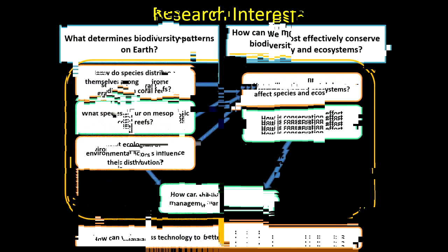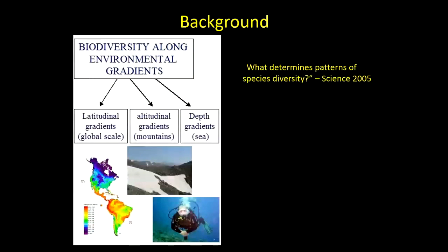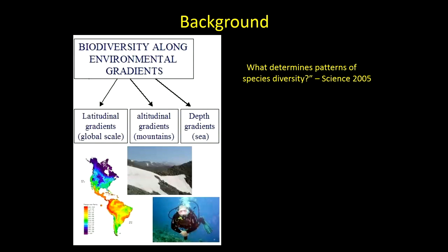So, what determines patterns of species diversity? In 2005, Science, as part of their 125th anniversary, published 125 of the most critical questions in science, and 'what determines patterns of species diversity' was one of them. We know that biodiversity is distributed along various environmental gradients - latitudinal gradients at global scales, altitudinal gradients as you go up a mountain, and depth gradients in the sea.